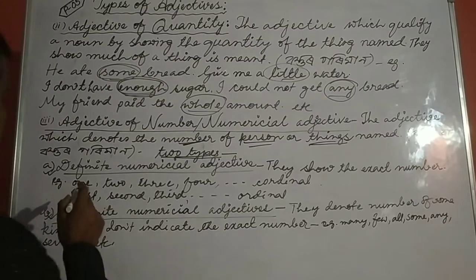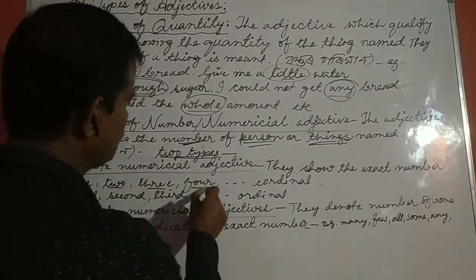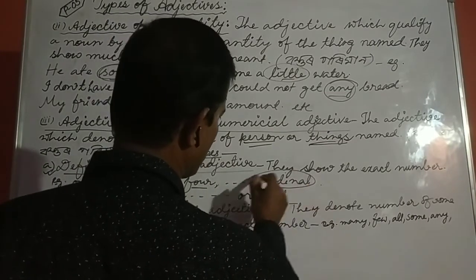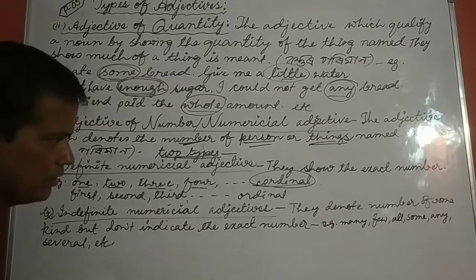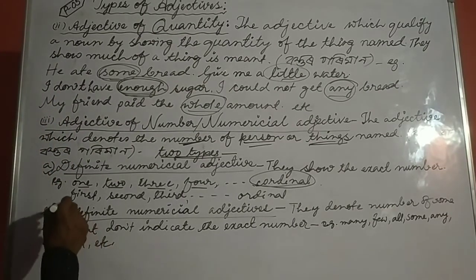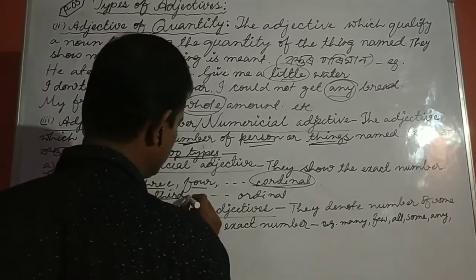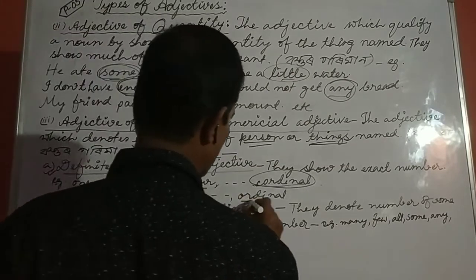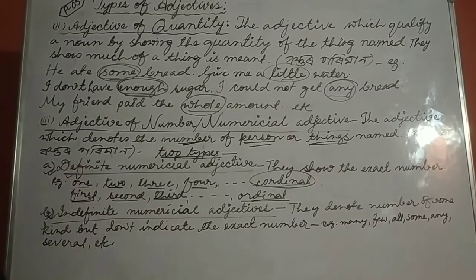Next, adjective of number. Examples: one, two, three, four, five, six, seven. These numbers are cardinal numbers. Ordinal numbers are: first, second, third, fourth, fifth, sixth. These are ordinal adjectives.